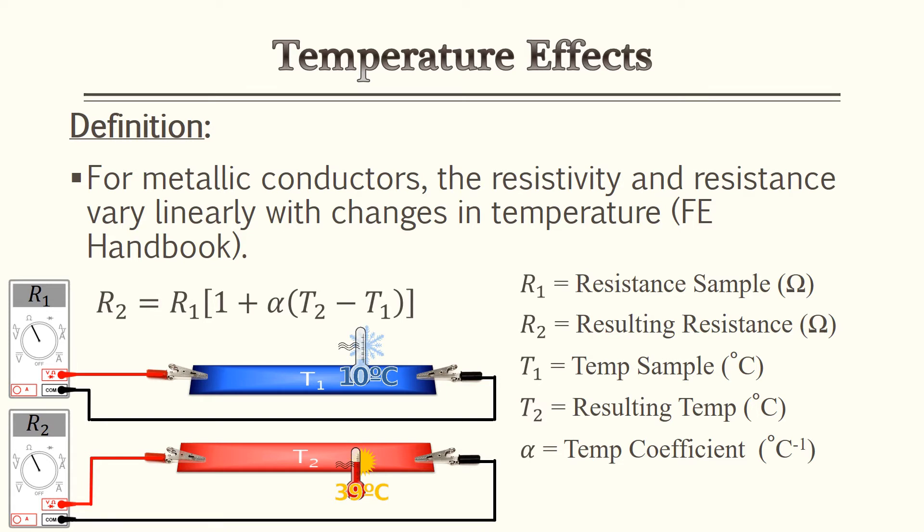This variation is linear. The equation given finds a resistance at a known temperature and determines what the resistance is at a later temperature. The temperature coefficient is usually given, or you can find it in some of your PE reference material. We'll go over this more in later examples.